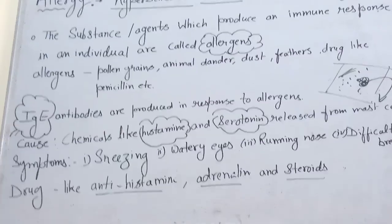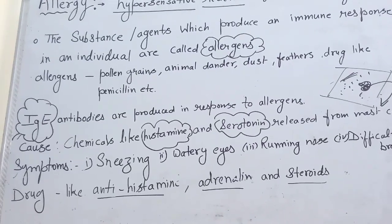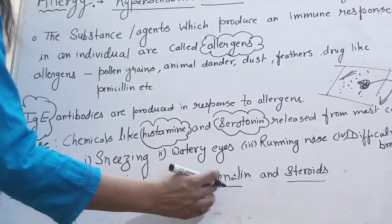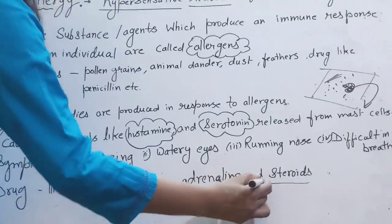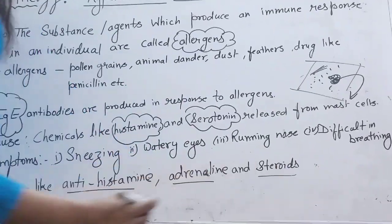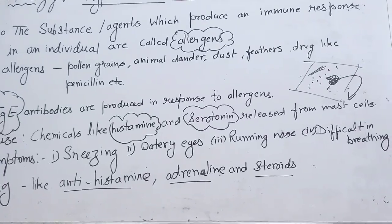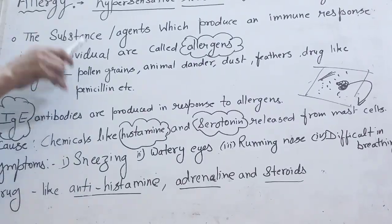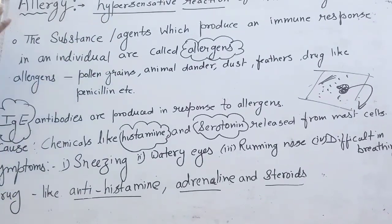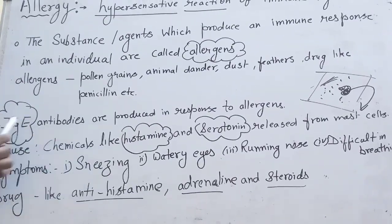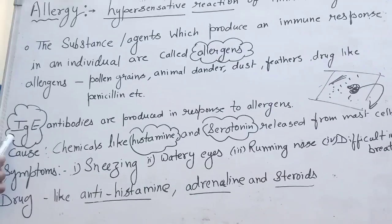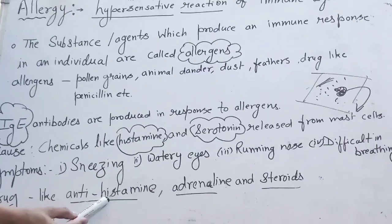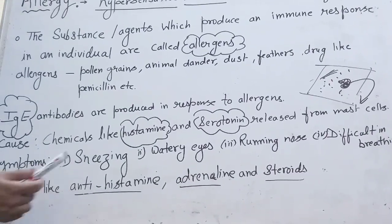So how can we solve this problem? We provide some drugs for the allergic person — drugs like antihistamine, adrenaline, and steroids. If it is a very severe condition, that person can take these types of drugs to cure or reduce this allergy. In exams, IgE can come, the chemical name can come, and the drugs to cure this problem can also be asked.